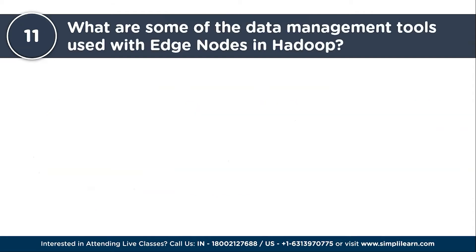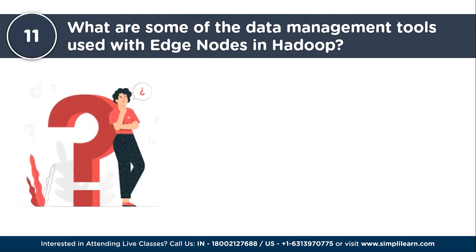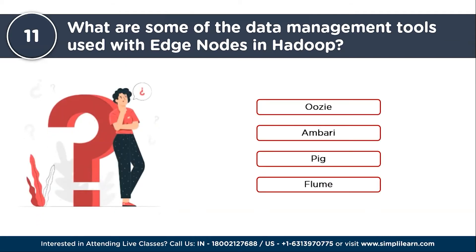The next question: what are some of the data management tools used with edge nodes in Hadoop? When it comes to edge nodes in Hadoop, several data management tools and frameworks come into play. Notable among them are Oozie, Ambari, Pig, and Flume. These tools are commonly utilized in conjunction with edge nodes to enhance data management capabilities within Hadoop clusters.